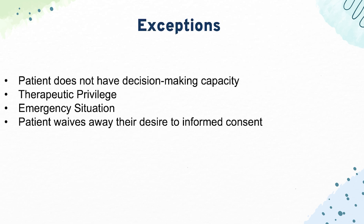While informed consent is very testable, equally testable are the exceptions to informed consent. The first is that the patient doesn't have decision-making capacity — if the patient lacks understanding or isn't acting voluntarily, you should not give them the intervention, as they must have full understanding of the treatments at hand. The next is therapeutic privilege, which states that if patients would be harmed by knowing their diagnosis, or if they would harm others, that information should be withheld from them.